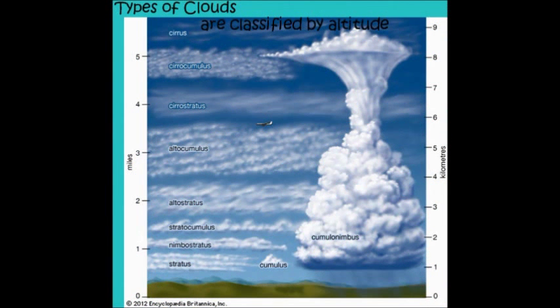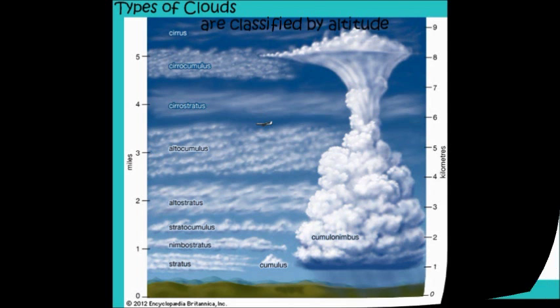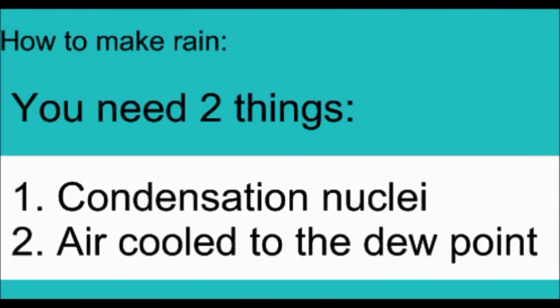Types of clouds are classified primarily by the altitude at which they typically form. To make rain, you need two things. You need condensation nuclei, and you need to have air cooled to its dew point.